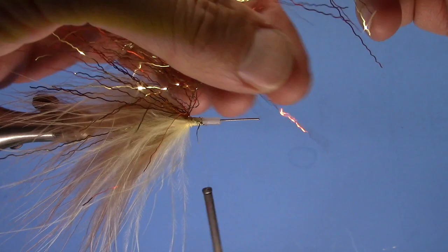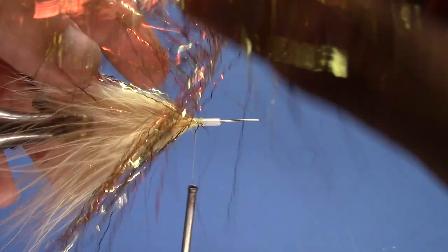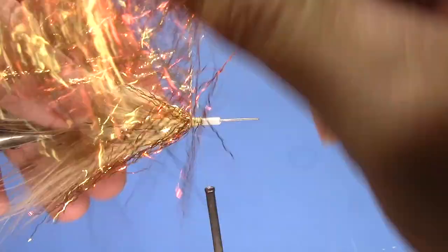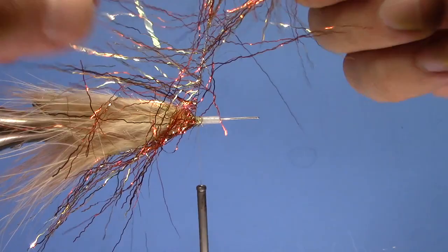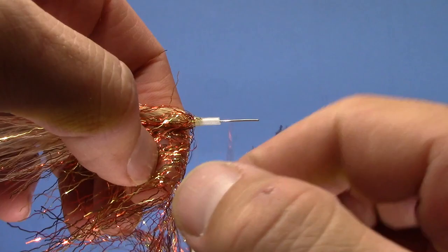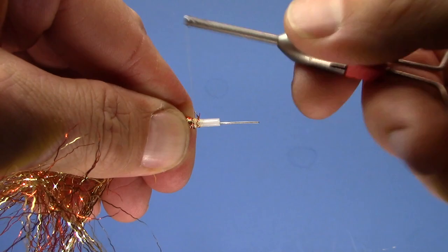I'm going to do the same thing with this brush. Fold it. Get all those fibers kind of flowing back. Wrap a couple wraps of that, more like three or four I guess. We'll tie that off. Trim off the excess. Save it for another fly.